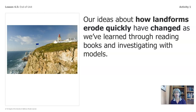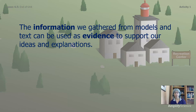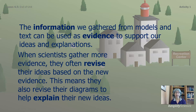Our ideas about how landforms erode quickly have changed as we've learned through reading books and investigating models. The information we've gathered from models and text can be used as evidence to support our ideas and explanations. When scientists gather more evidence, they often revise their ideas based on the new evidence. This means they also revise their diagrams to help explain their new ideas.